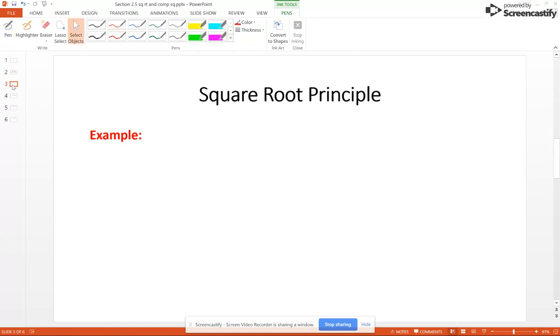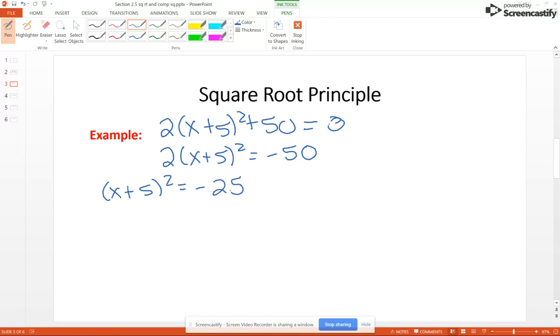Now let's look at an example where your square term is an algebraic expression instead of a variable. So if we had 2 times x plus 5 squared plus 50 equals 0, we still have to isolate our square term, so we're going to subtract 50 from both sides. So 2 x plus 5 squared equals negative 50. We're going to divide through by 2, so we get x plus 5 all squared equal negative 25. And now we can apply the square root principle and we'll get x plus 5 equals plus or minus the square root of negative 25.